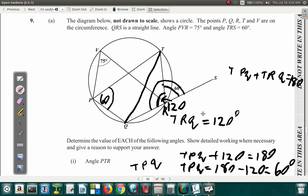And remember, you should use up the space. Write down this and the other explanations. Write them out in English if you want to, but it's preferable that you write them out mathematically like this. Write down what it is that you're doing, because they say show detailed working where necessary and give a reason to support your answer.